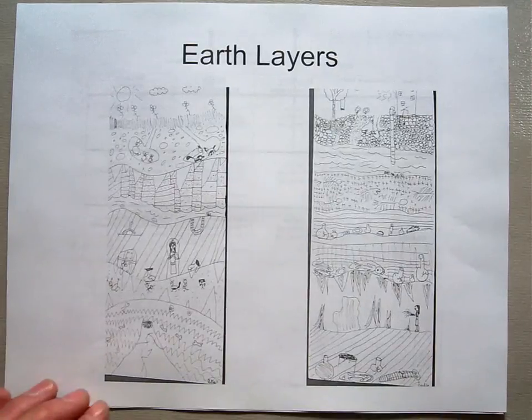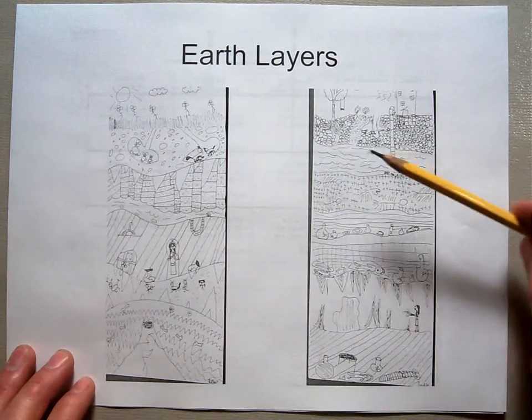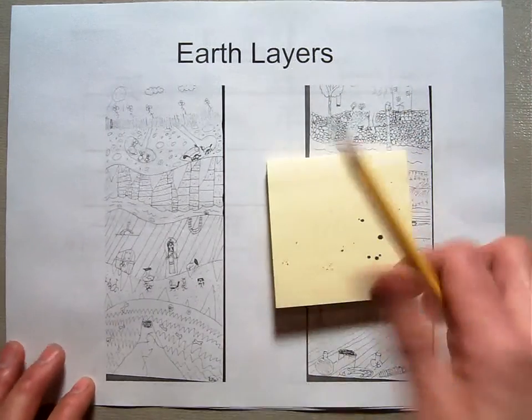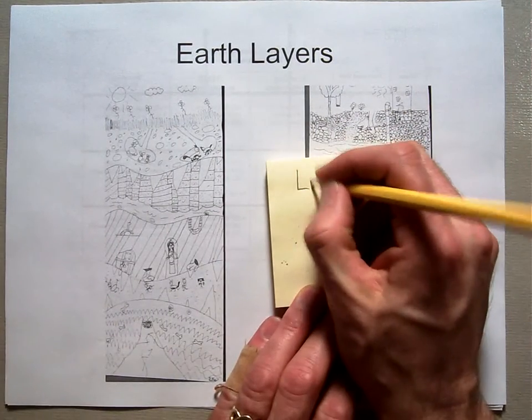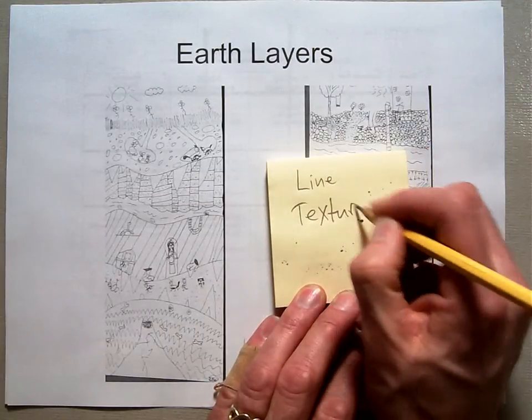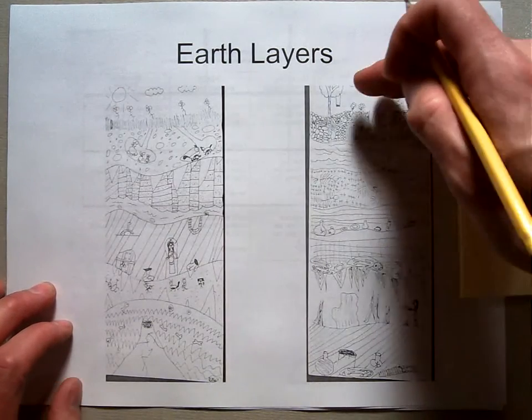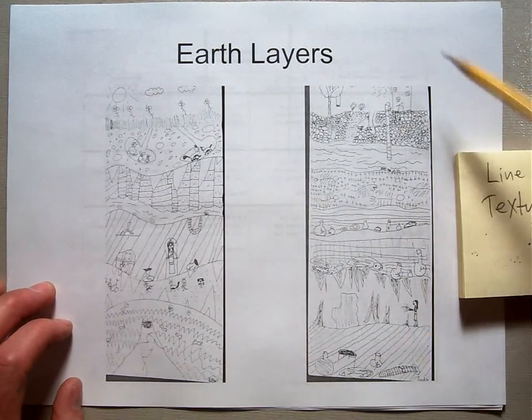In this session we're going to be making an earth layer picture. You're going to be using the elements of line and texture to create a dynamic drawing of a cross section of the earth.